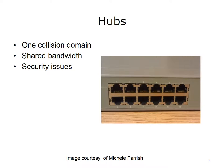Another problem with hubs is that bandwidth is equally shared among all active ports. If the bandwidth coming into the hub is 10 megabits per second and there are 5 active ports, then each port has access to 2 megabits per second. The ports are all part of one collision domain, which means all devices connected to those ports must compete with each other to have access to the network.